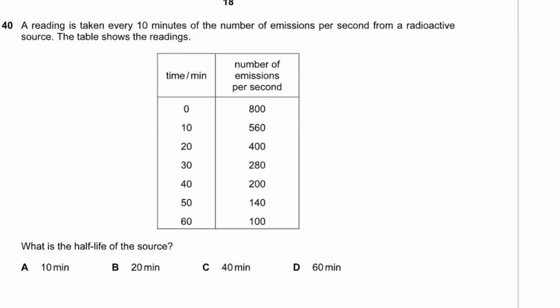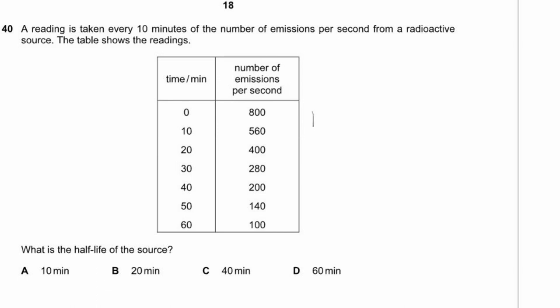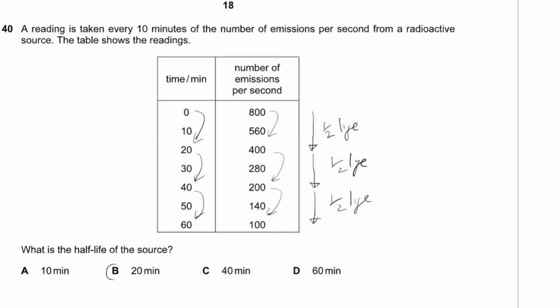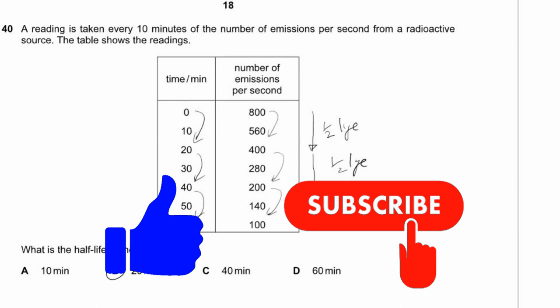Question 40. A reading of emissions per second is taken every 10 minutes for a radioactive source. Starting at 800, it drops to 400 (one half-life), then 200 (another half-life), then 100 (another half-life). Each drop corresponds to 20 minutes, so the half-life is 20 minutes. Answer B. Hopefully you've enjoyed that — if you liked it, feel free to like and subscribe, and leave any comments about what you'd like me to cover.